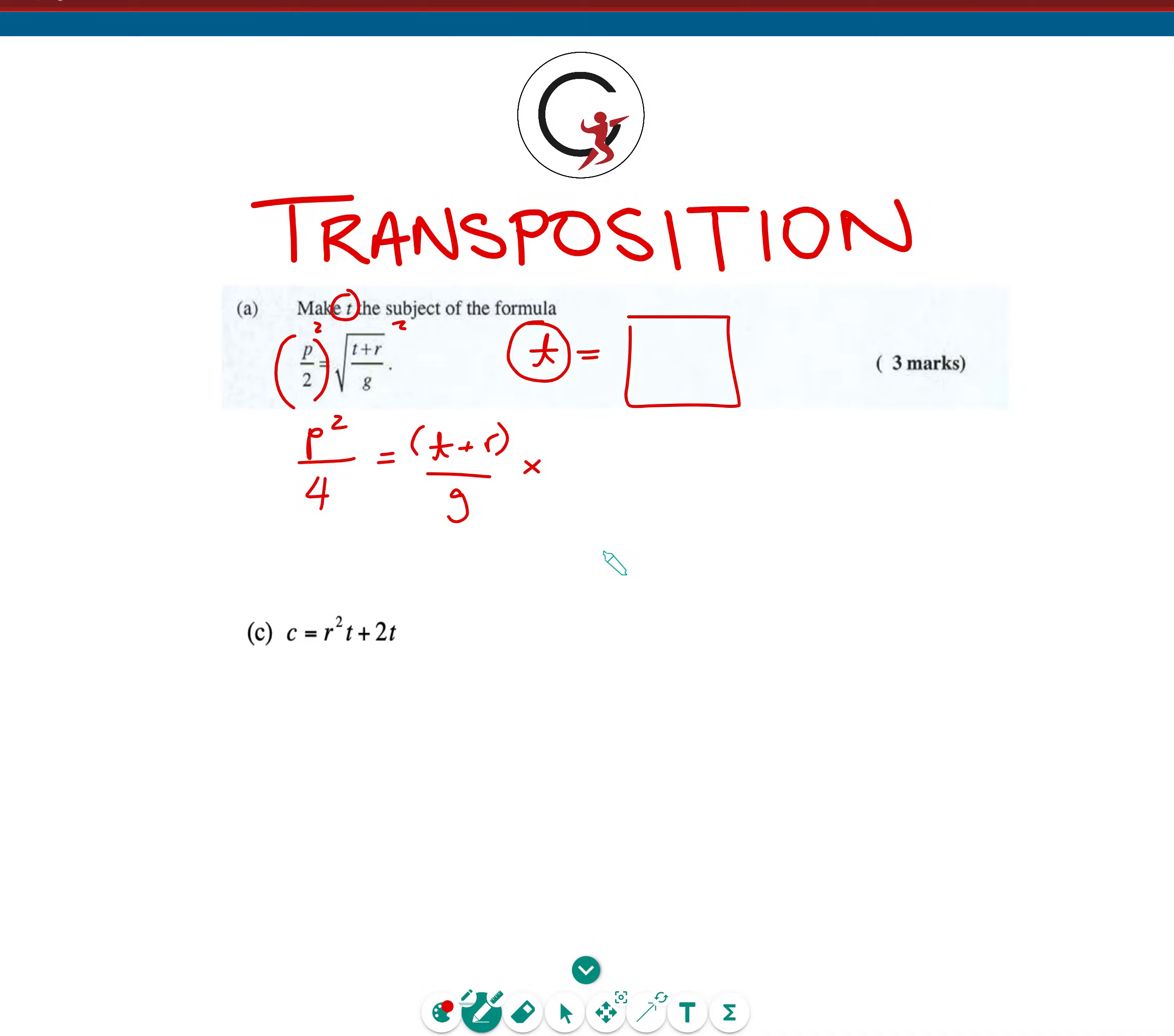A simple way that you can visualize this is by thinking of cross-multiplying, meaning you can move this G diagonally across the equal sign, as long as there is one fraction being equal to another fraction. Next we see that we have T plus R by itself. The last step we need to do is get rid of this plus R.